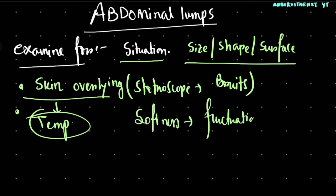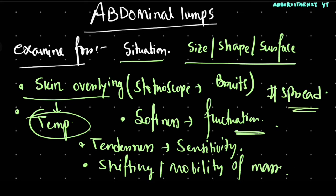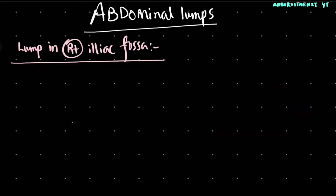Perform a fluctuation test, look for tenderness or sensitivity of the mass, check for shifting or mobility of the mass, and assess the spread of the lump. Now, if the lump is present in the right iliac fossa, what may be the differential diagnosis?